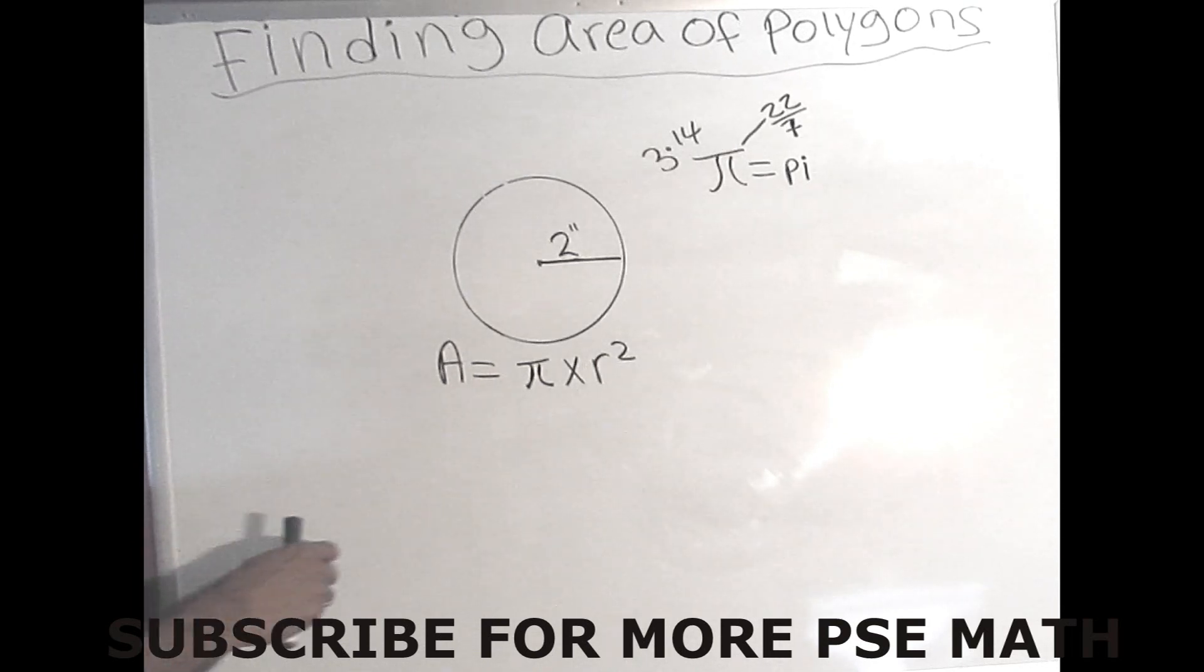Here we have a circle with the radius of 2 and the formula to find the area of a circle: area equals pi times r squared. Usually for PSE they will use pi as 3.14 or 22 over 7, but the problem is always specific. They will always ask you or inform you of which one to use.